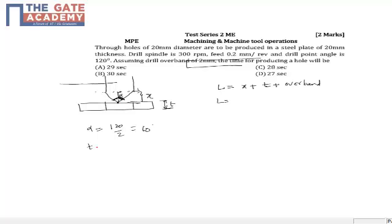So I can write from this geometry tan alpha is opposite side which is the radius of the spindle by your distance x, and I need to find out x which is r by tan alpha. r is the diameter of the hole, the diameter of the spindle, which is d by 2 tan alpha. So d by 2 tan alpha is my distance x plus thickness t of the steel plate. This is length of the travel of the spindle and the overband.